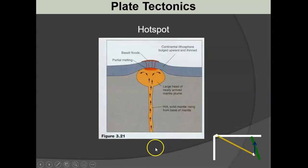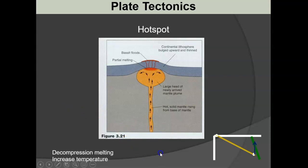The only other place we see volcanism is at hot spots - not at a plate boundary. Decompression melting occurs here because a heat source causes the mantle to be hotter at depth, creating a rising plume. The hotter mantle is less dense than the colder mantle, so it rises up and impacts the lithosphere - either continental or oceanic - and can break through the crust, causing volcanism at locations not associated with any plate boundary.